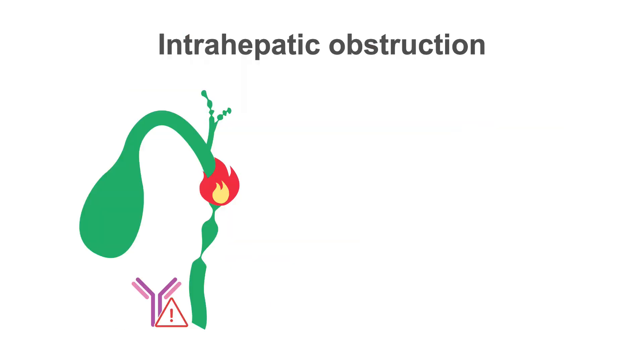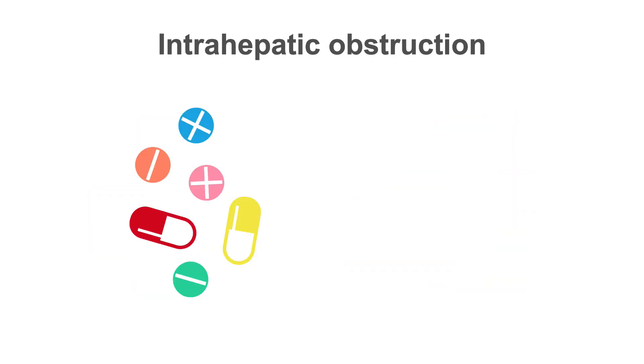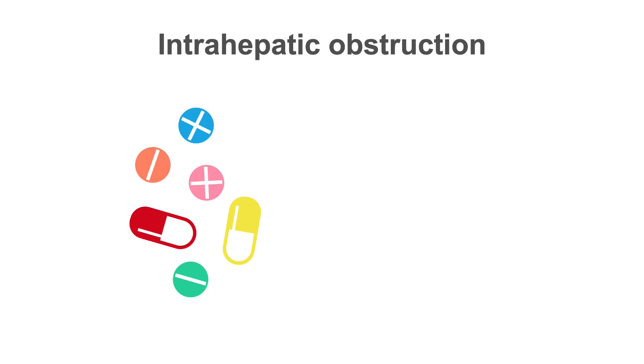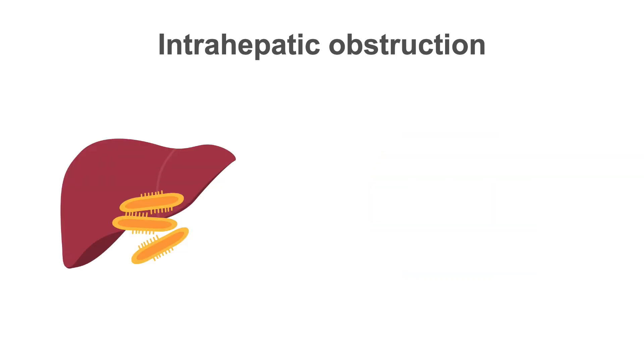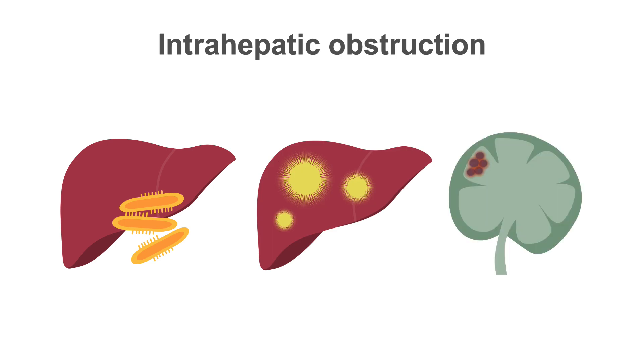Causes of intrahepatic obstruction include primary sclerosing cholangitis, primary biliary cholangitis, drugs such as steroids or chlorpromazine, toxins, and infiltrative diseases like tuberculosis, sarcoidosis, and lymphoma.